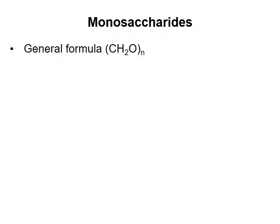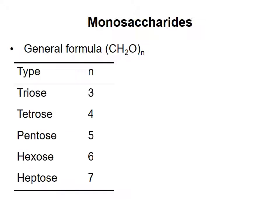Monosaccharides have the general formula shown, where n is a number usually from 3 to 7. From the formula, it looks like each carbon is attached to water, which explains the name carbohydrates. We name monosaccharides according to the number of carbons they have, with the suffix -ose as shown.